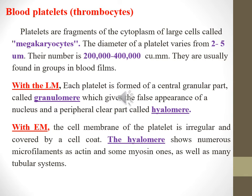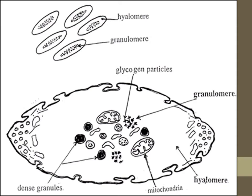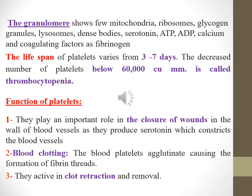With electron microscope, the cell membrane of the platelet is irregular and covered by a cell coat. The hyalomere shows numerous microfilaments such as actin and some myosin ones, as well as a microtubular system. The granulomere shows few mitochondria, ribosomes, glycogen, granules such as lysosomes, dense bodies containing serotonin, ATP, ADP, calcium, and coagulation factors such as fibrinogen.